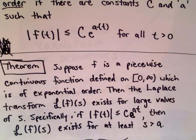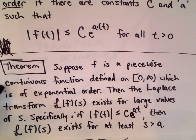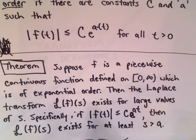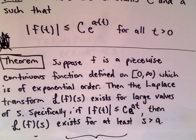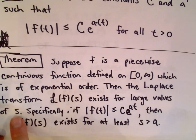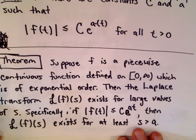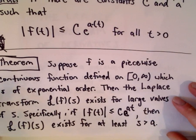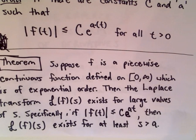Suppose f is a piecewise continuous function — we say a function is piecewise continuous if it has only finitely many points of discontinuity over any finite interval, and at every point of discontinuity the limit of f exists from both the left and the right. If you have a piecewise continuous function defined on zero to infinity that is also of exponential order, then the Laplace transform exists. That's the key takeaway from this theorem.